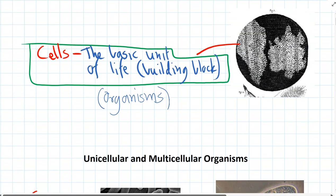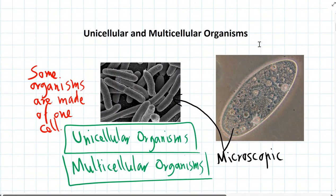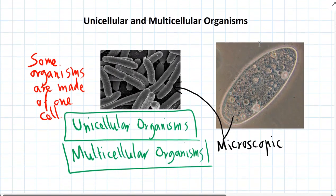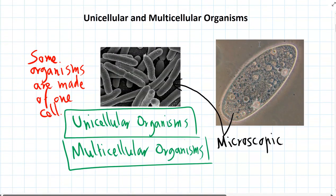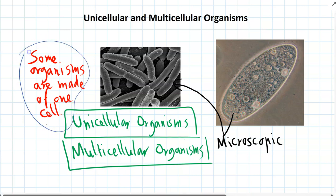Cells make up all living things. Some organisms are made up of just one cell and others are made up of lots of cells combined together and working as a single organism. Organisms that are made of one cell are called unicellular organisms.